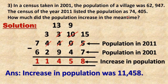The information given: population in 2011 is 74,405; population in 2001 is 62,947. What we are supposed to find out: how much did the population increase in the meantime? Method: subtraction — minus sign. Let us start the first statement.